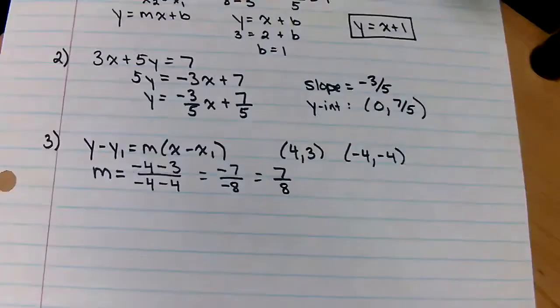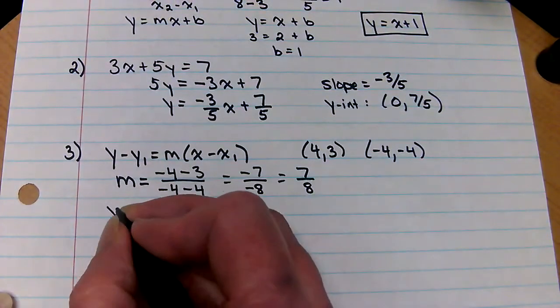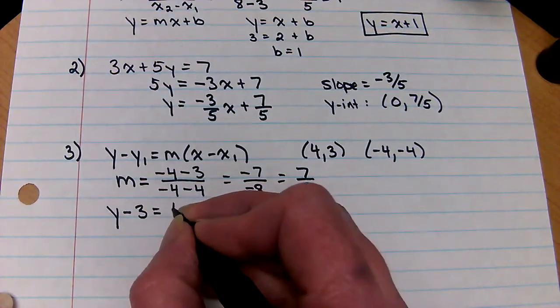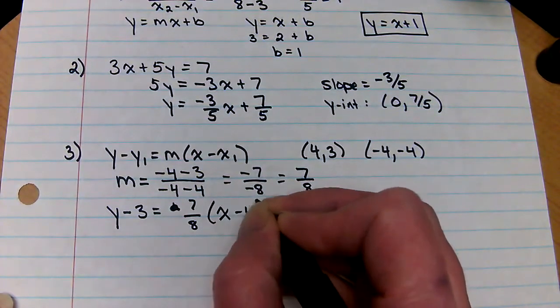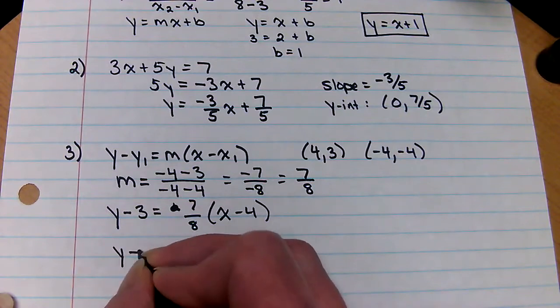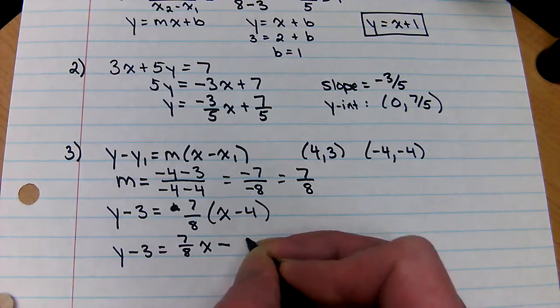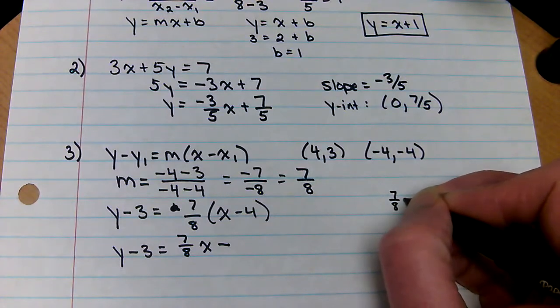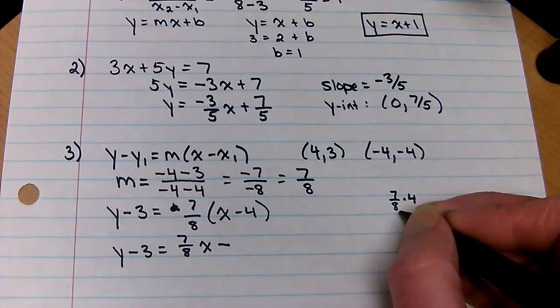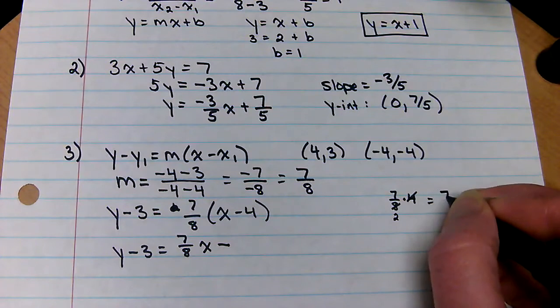Now, if I'm using the point-slope, I'm going to pick a point. I'll just pick four, three because it's all positive. Y minus three equals seven over eight times x minus four. And then we would distribute here. So that'd be seven over eight x minus, now seven over eight times four. Well, eight is four times two, so four can go into eight and leave me two. So that's seven halves.